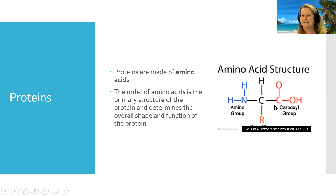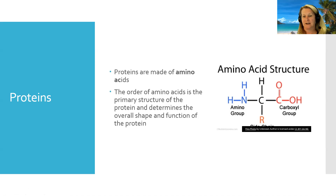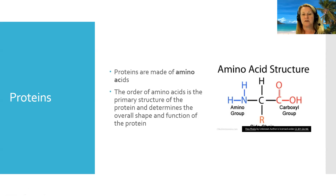Opposite the amino group is a second bond attached to a carboxyl or carboxylic acid group. The third position is always attached to a hydrogen atom, and the fourth position is attached to what's called an R group or side chain. The order of amino acids makes up what we call the primary structure of a protein, and the primary structure determines its overall shape — and shape determines function.